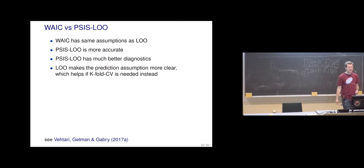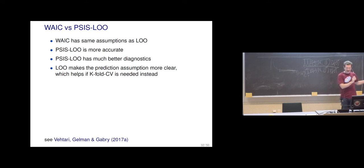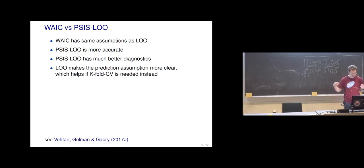In leave-one-out cross-validation, we are emphasizing that it is just one observation we try to predict given other data. This makes the connection to k-fold cross-validation more clear. It's also good to think about what the model structure is and what our modeling task is — it's easier to think about different utility and cost functions in the case of cross-validation.